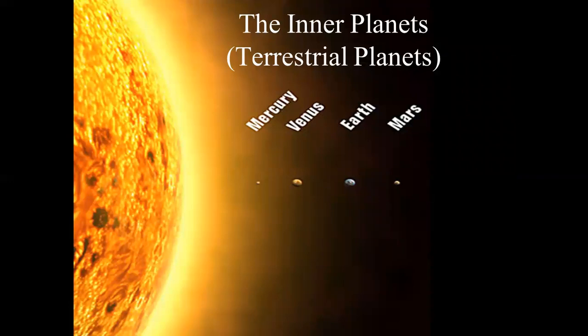Based on their composition, the planets closest to the sun are these four: Mercury, Venus, Earth, and Mars. These four planets closest to the sun are called inner planets as well as terrestrial planets.